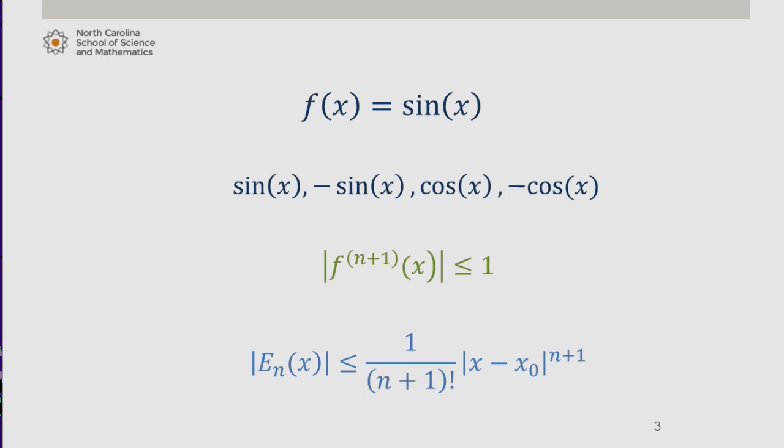As a result, we now have that the error bound is bounded above by 1 over n plus 1 factorial times the absolute value of x minus x0 to the n plus 1.